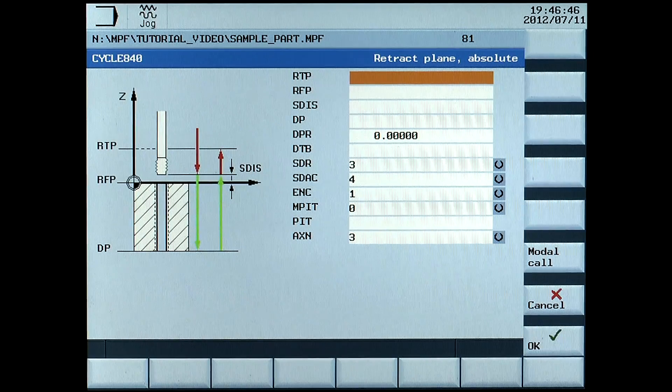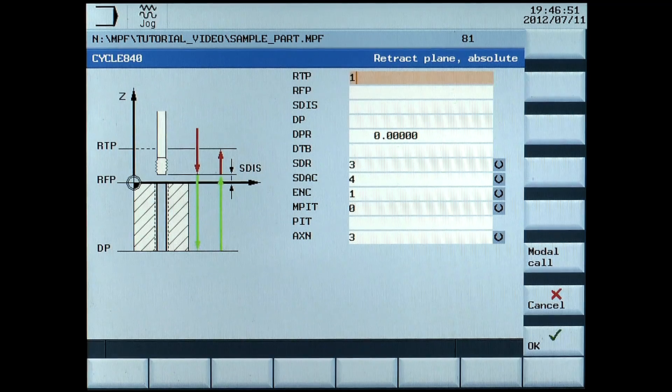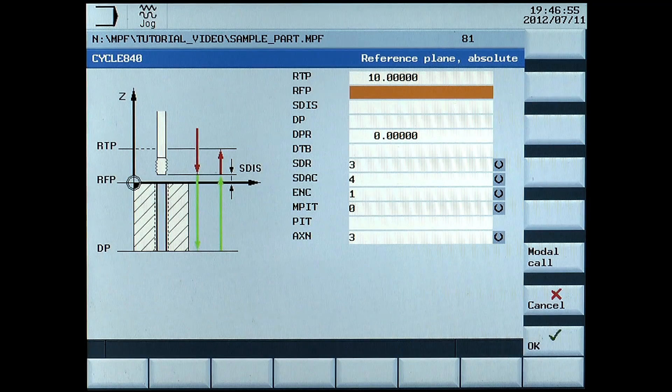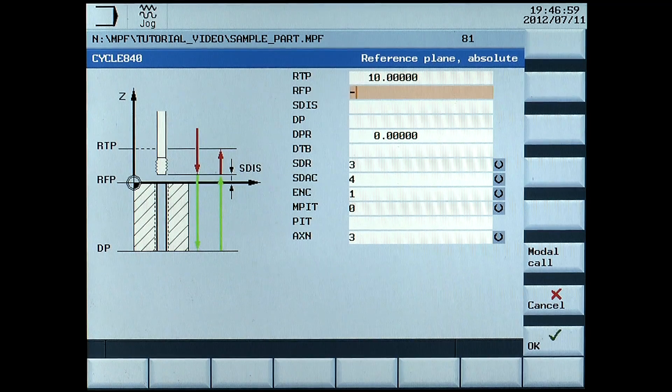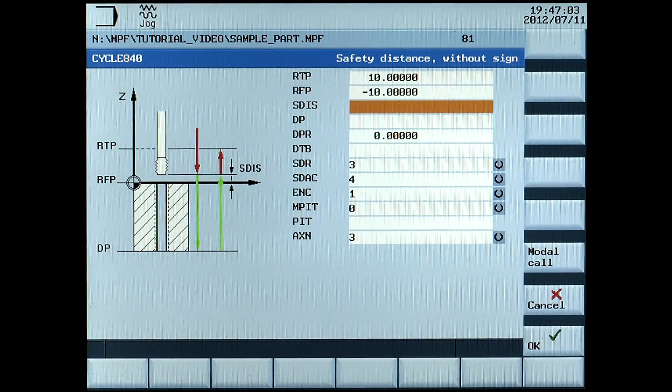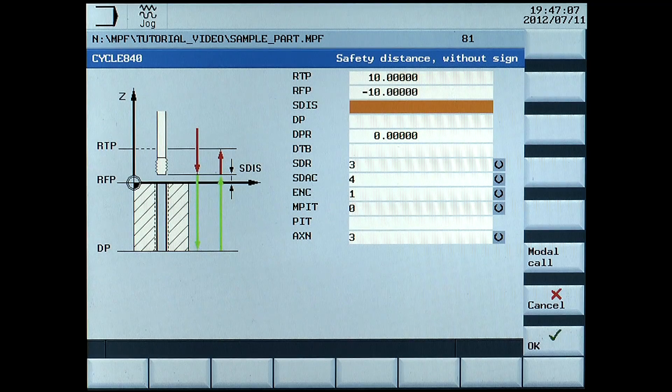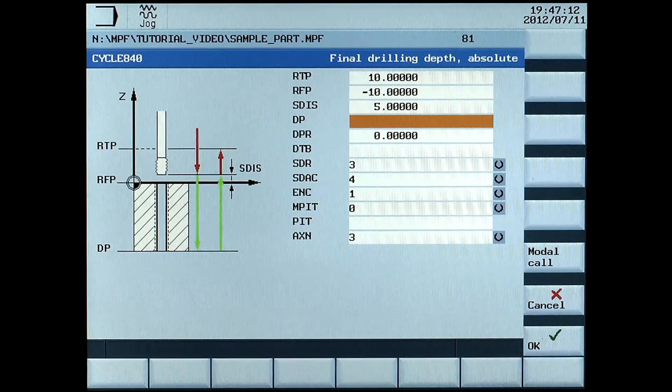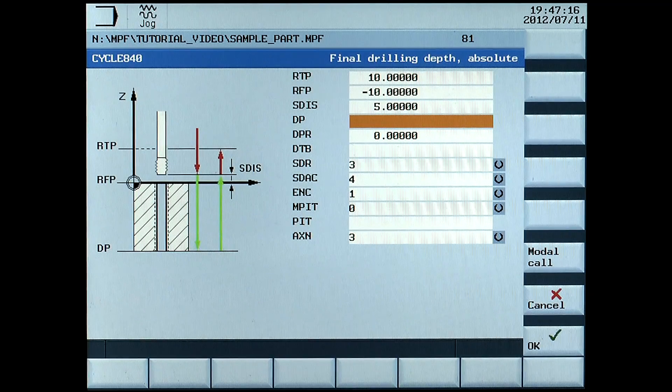RTP, retraction plane absolute, enter 10mm. RFP, reference plane absolute, enter minus 10mm. SDIS, safety distance without sign, enter 5mm. DP, final drilling depth absolute, enter minus 20mm.